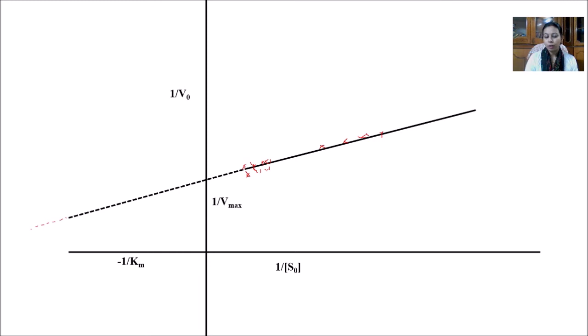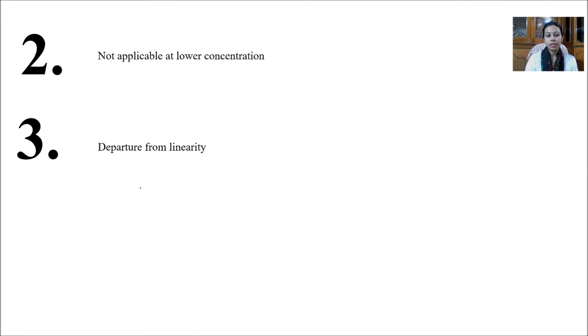But here the problem is how we can choose which point should be adopted and which is not. So this also does not give proper accuracy to the V max and Km. That is why there is a greater departure from the linearity.